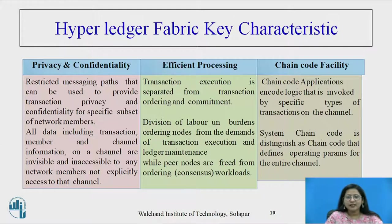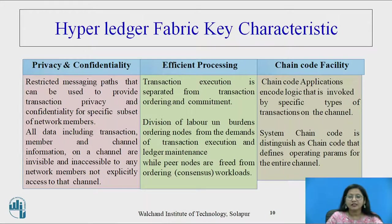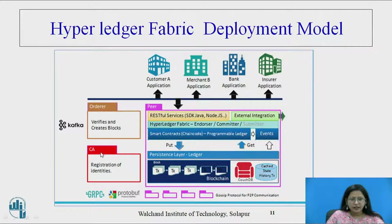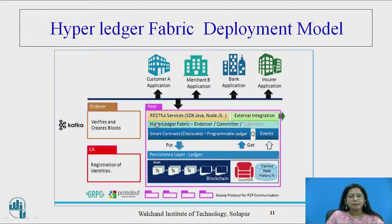Chaincode facility: chaincode applications encode logic that is invoked by special types of transactions on the channel, and system chaincode is distinguished as chaincode that defines the operating parameters for the entire channel. Now, looking at the Hyperledger Fabric deployment model, three things are present: Orderer, CA, and Peer. Orderer, Certificate Authority, and peers — customer A application, merchant B application, bank application, and insurer applications — are all running on a single platform accessible through their respective peers.